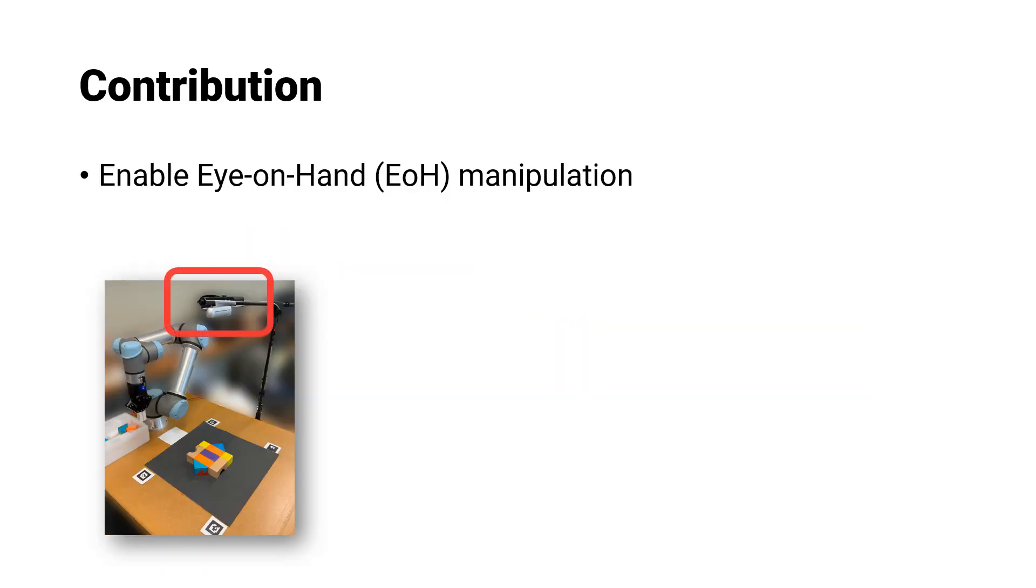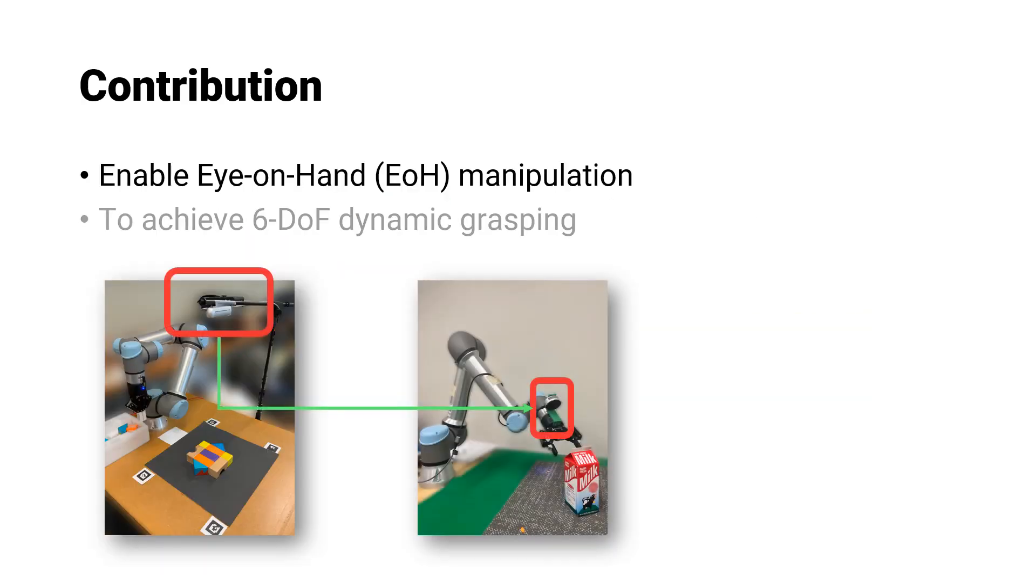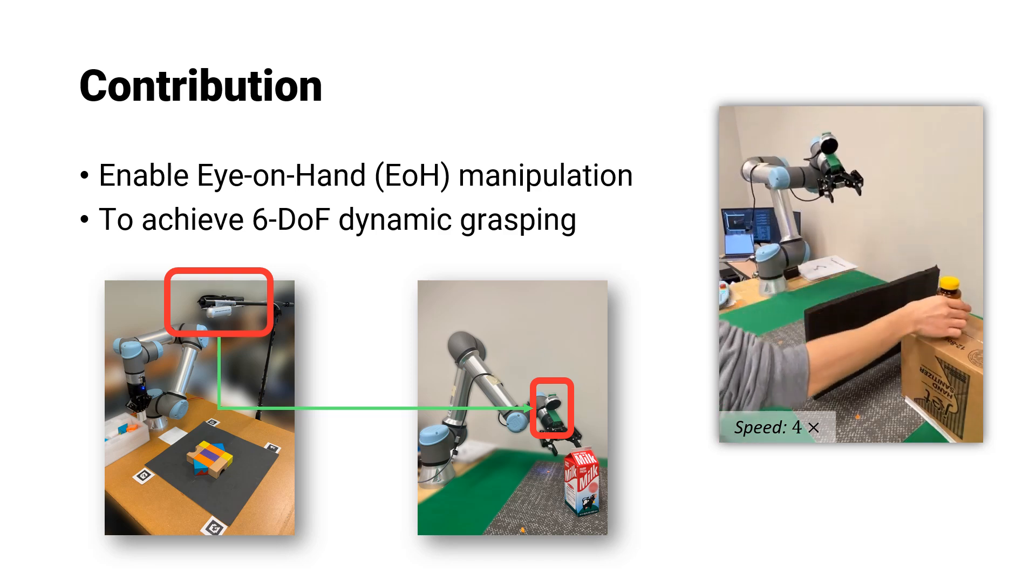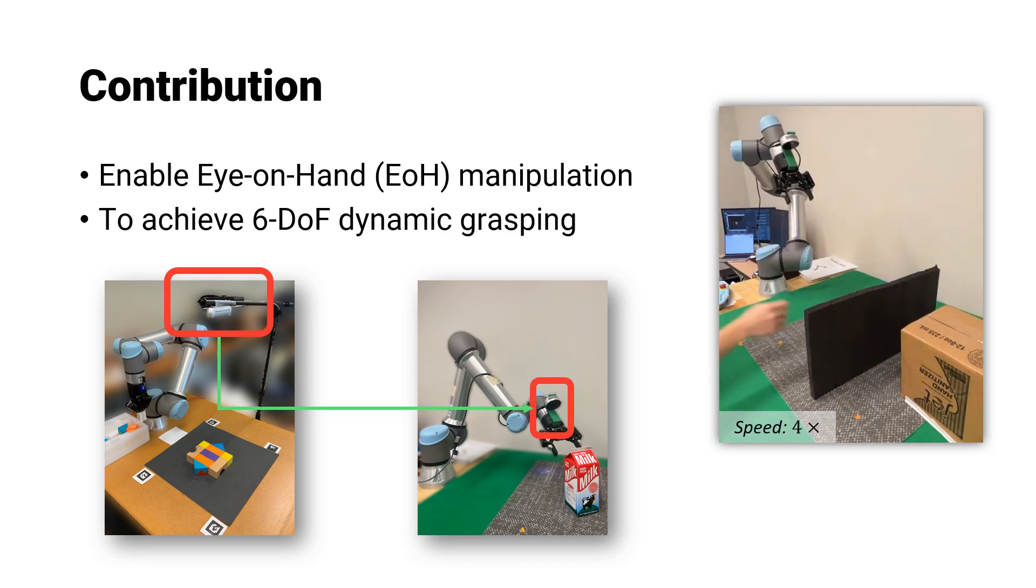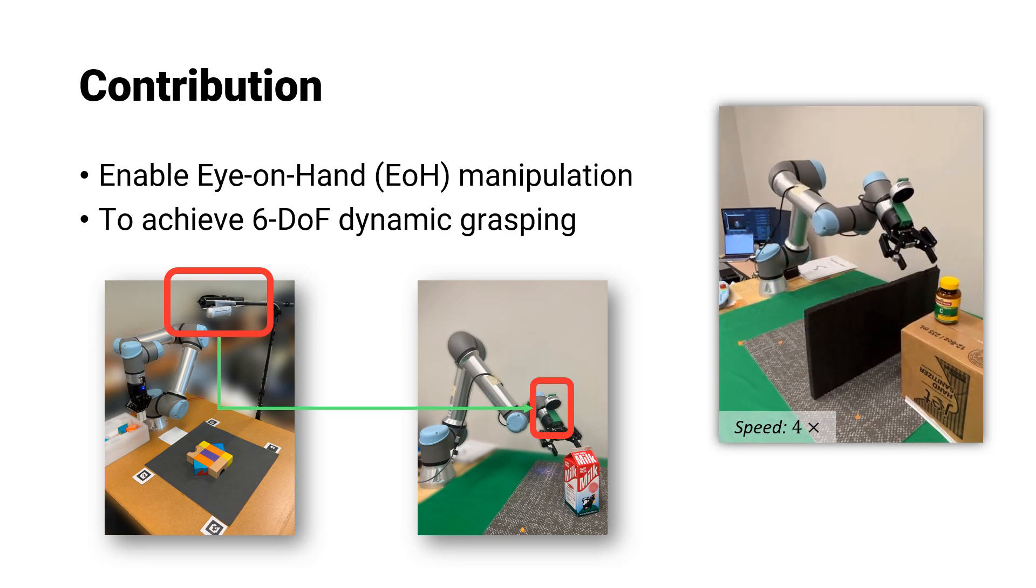We've developed a framework that combines active tracking and reinforcement learning for 6-DOF dynamic grasping of unknown objects. Extensively tested in both simulated and real-world settings, our framework is compatible with various eye-on-hand systems.